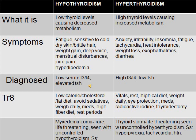A complication of hyperthyroidism is thyroid storm — a life-threatening condition seen with uncontrolled hyperthyroidism. Signs and symptoms include hyperpyrexia, tachycardia, and hypertension.